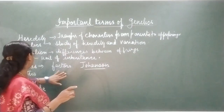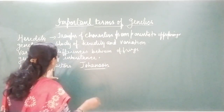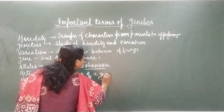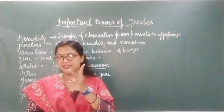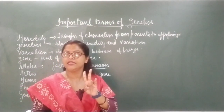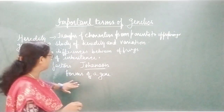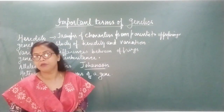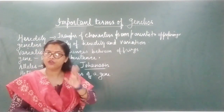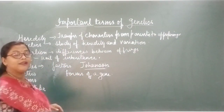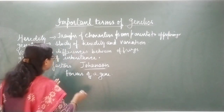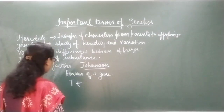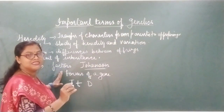So what are alleles? Alleles means the forms of a gene. Every gene has two alleles — always remember that. In the case of blood groups, multiple alleles are found, but mostly every gene has two forms. For example, capital T and small t are the two alleles — the two forms of a gene.